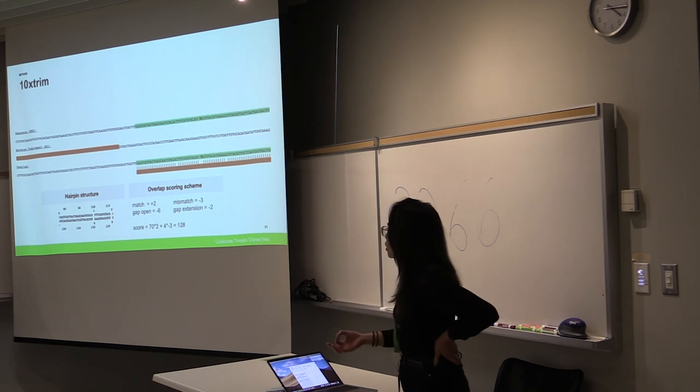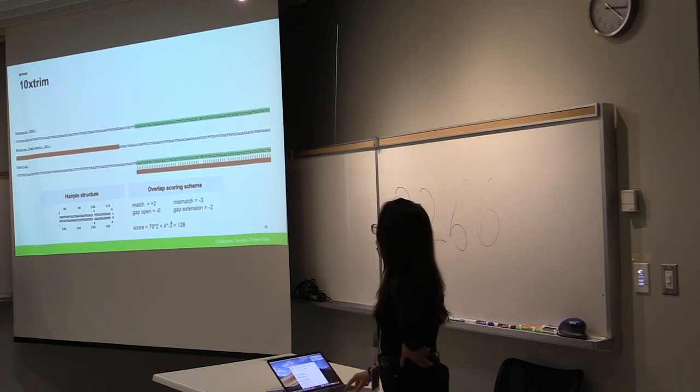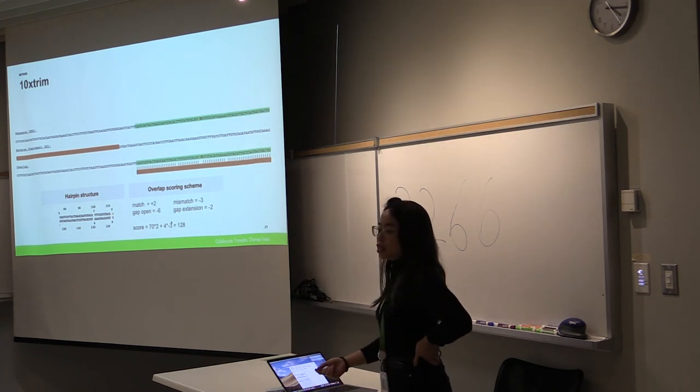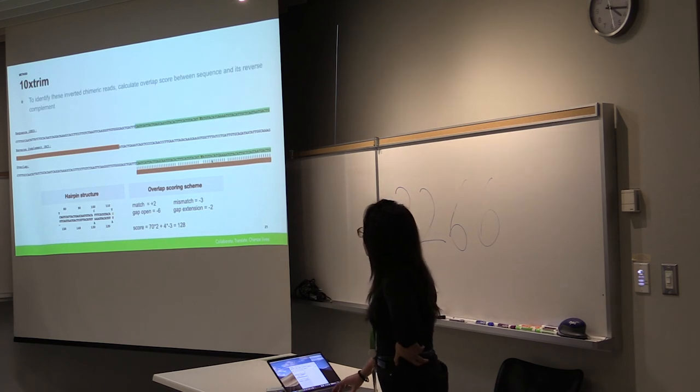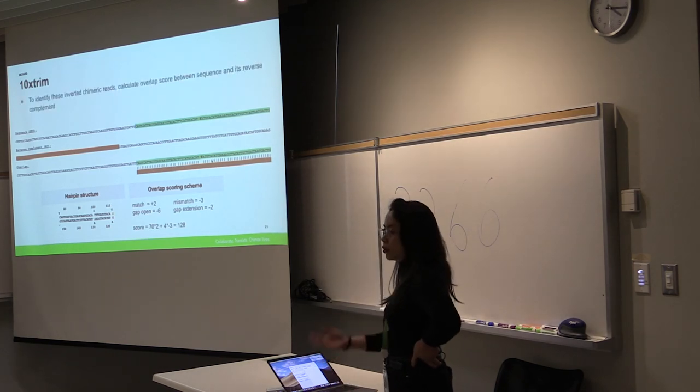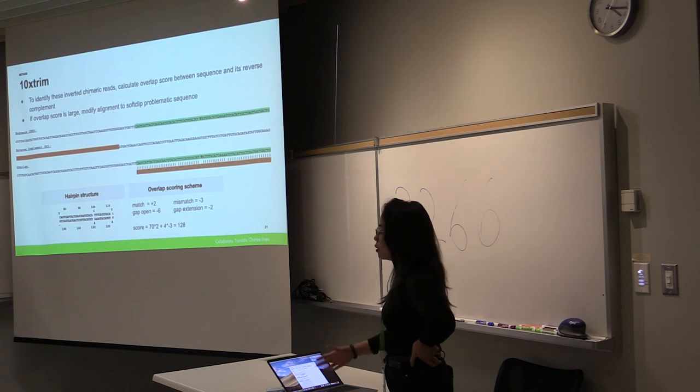And in order to determine if we should trim it, it uses an overlap scoring scheme, which is a function of the number of matches and the number of mismatches that occur in this overlap. And so to identify these inverted chimeras, we calculate an overlap between the reverse complement and the original sequence. And if the overlap score is high, we apply this methodology of trimming to the reads.